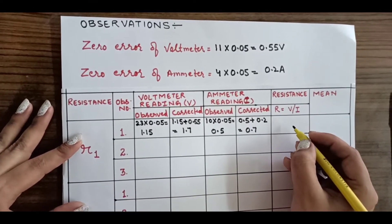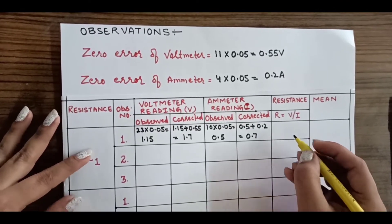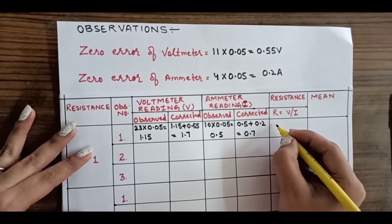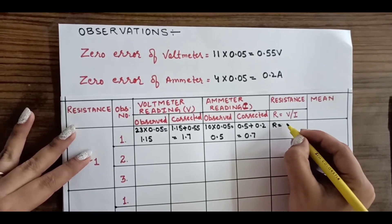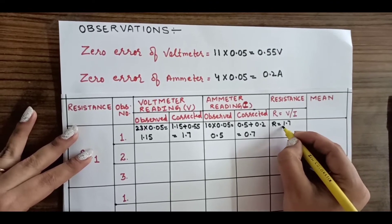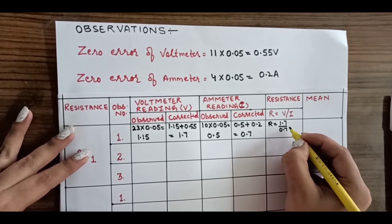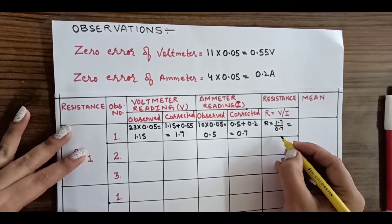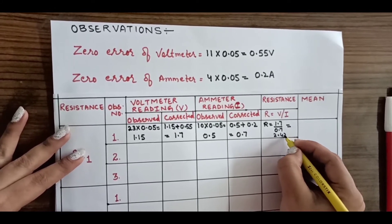Now to find out the resistance we will use the formula R equals V upon I, given by Ohm's law. We get resistance equals 1.7 divided by 0.7, which equals 2.42 ohms.